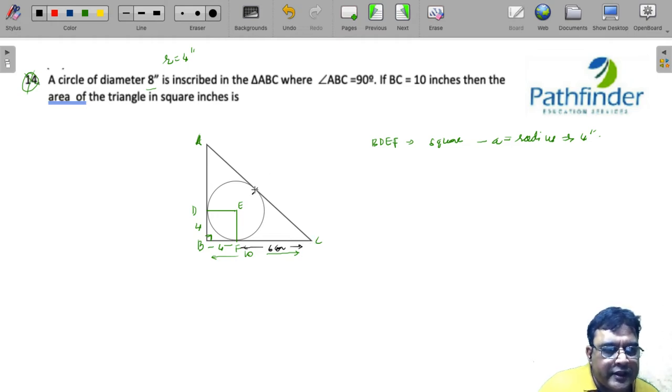If FC is 6 inches, let us say this point is G, CG must also be 6 inches, because tangents from an external point are equal.